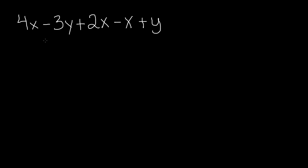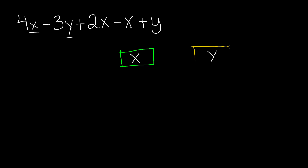First things first, you need to find out which terms are like, because unlike terms cannot be added or subtracted. To find that out, we check if the variables are alike. In 4x, the variable is x, so I'll make an x category to list out terms with x as a variable. In negative 3y, the variable is y, so I'll make a y category. I'll write 4x and negative 3y in their respective categories.